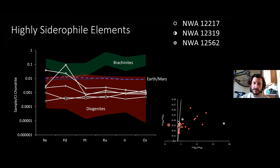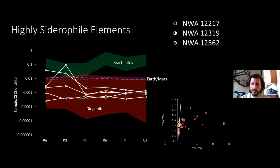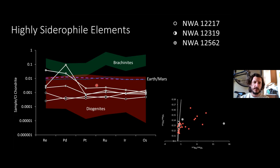Showing the Re-Os isotopic diagram: NWA 12562 deviates from the 4.56 Ga rhenium-osmium isochron in terms of its rhenium composition but not its osmium composition. This is typical of desert meteorites — suggesting this meteorite experienced some sort of late addition of rhenium, which would also explain the palladium enrichment. This suggests a weathering product; without the weathering process, you would have an overall chondritic shape to the highly siderophile element pattern.